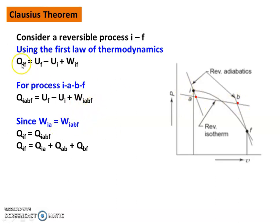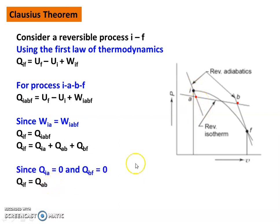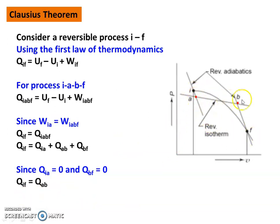With the condition W_IF = W_IABF and two equations, we get Q_IF = Q_IABF. Now, Q_IABF = Q_IA + Q_AB + Q_BF. Since I-A and B-F are reversible adiabatic processes, their heat transfer equals zero: Q_IA = 0 and Q_BF = 0. Therefore Q_IF = Q_AB. The heat transfer for the curved process I-F equals the heat transfer for the isothermal process A-B. Any curved process can be replaced by a reversible isothermal and reversible adiabatic lines.